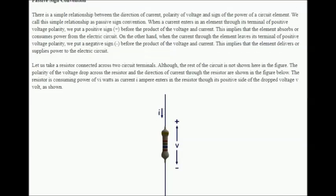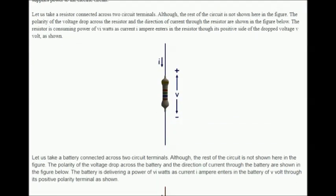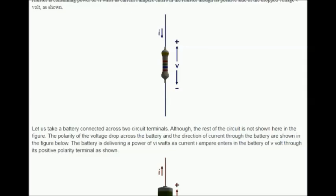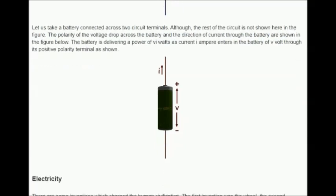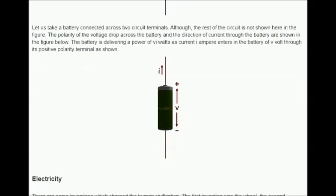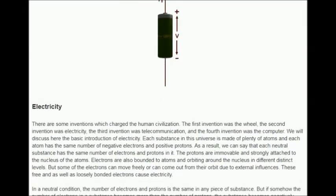Let us take a resistor connected across two circuit terminals. The polarity of the voltage drop across the resistor and the direction of current through the resistor are shown in the figure. The resistor is consuming power of VI watts as current I amperes enters the resistor through the positive side of the dropped voltage V volts. Now consider a battery connected across two circuit terminals. The battery is delivering a power of VI watts as current I amperes enters the battery through its positive polarity terminal.